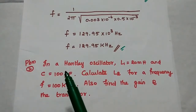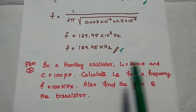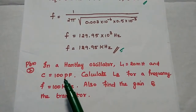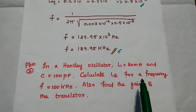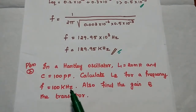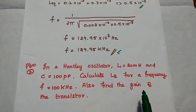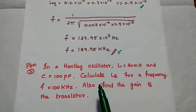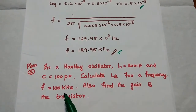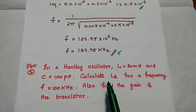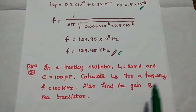The next problem: in a Hartley oscillator, L1 is equal to 20 millihenry and C is equal to 100 picofarad. Calculate L2 for a frequency F equal to 100 kilohertz. Also find the gain of the transistor. Here they have given us L1 value, C value, and F value. We are going to find out L2 and the gain of the transistor amplifier.